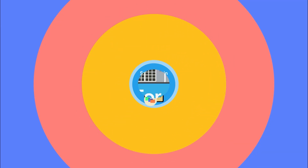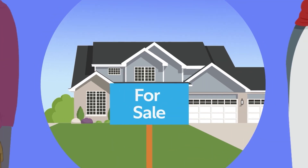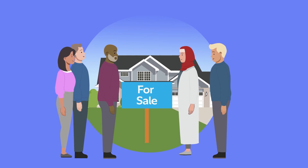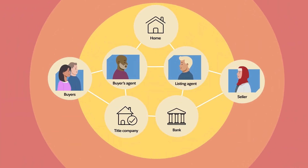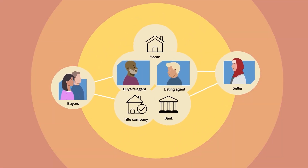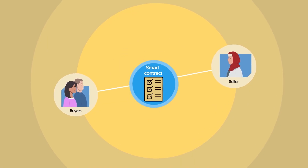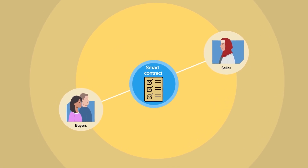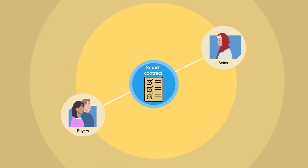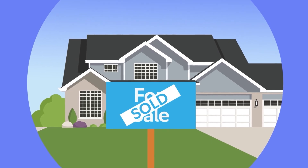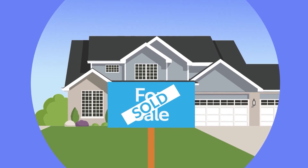For example, say you're buying a house. Traditionally, several middlemen would be involved, such as a bank and multiple real estate agents. Smart contracts could potentially remove all third-party involvement and the need for a lengthy application process, making real estate transactions more cost-effective and efficient.